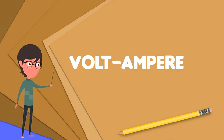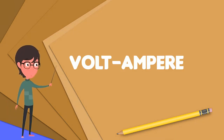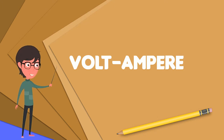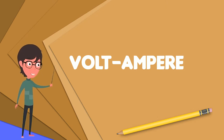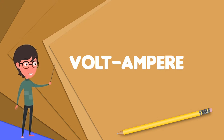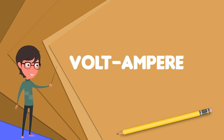A volt-ampere is the unit used for the apparent power in an electrical circuit, equal to the product of root mean square voltage and RMS current. In direct current circuits, this product is equal to the real power in watts. Volt-amperes are useful only in the context of alternating current circuits. With a purely resistive load, the apparent power is equal to the real power.